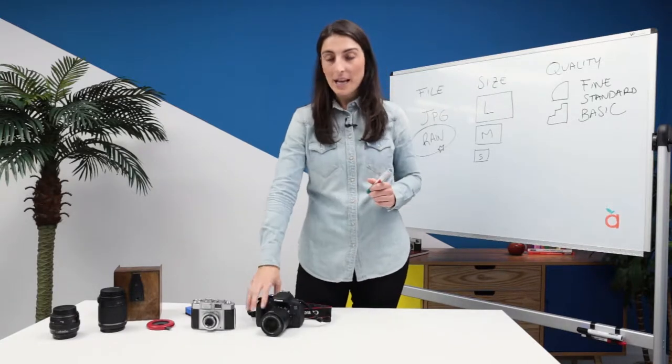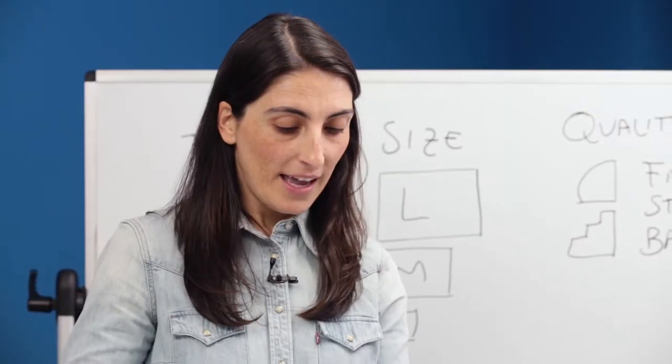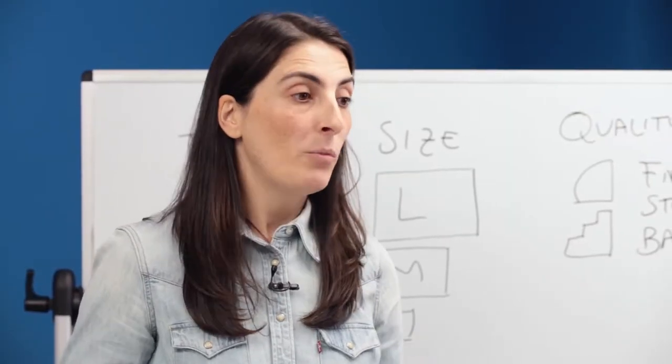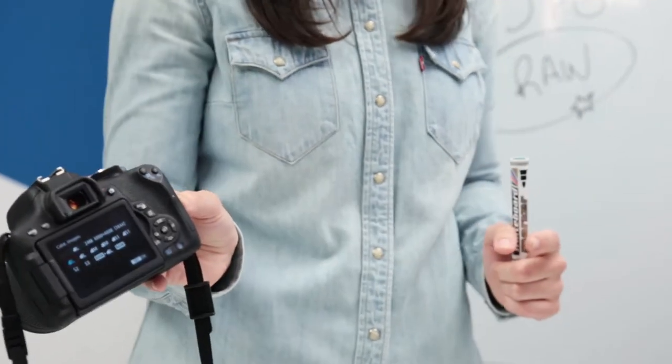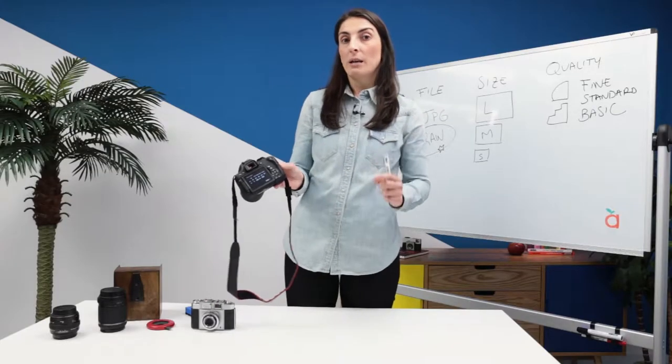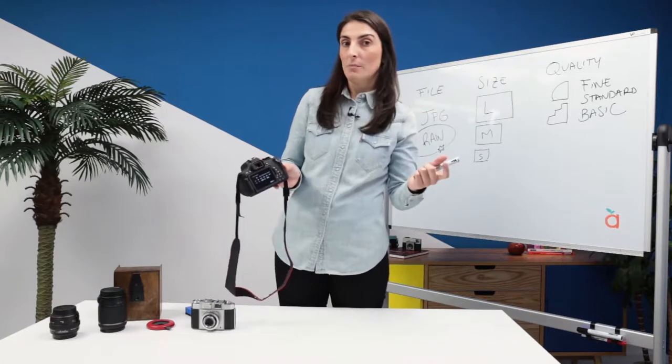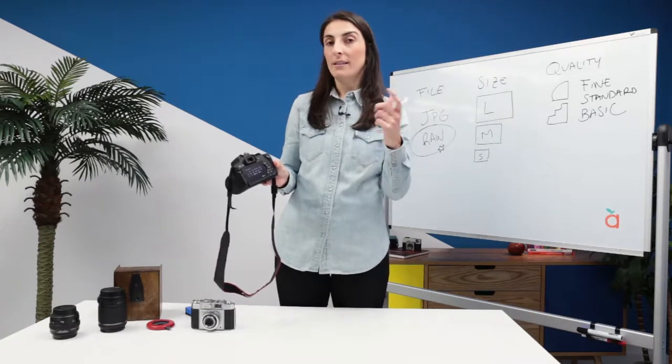Turn on the camera and go to the menu. Depending on the camera, we'll find a screen called quality. Or, in the case of Nikon, for example, we'll find two screens, one for quality and other for size.